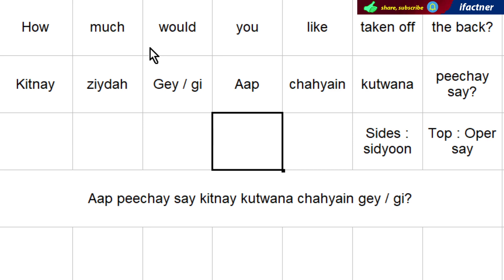'How much would you like taken off the back?' — 'Aap peechay se kitne katwana chaahainge.' 'How much would you like taken off the top?' — 'Aap ooper se kitne katwana chaahainge.' And 'taken off' can also be translated as 'utarwana'.